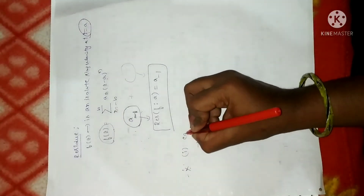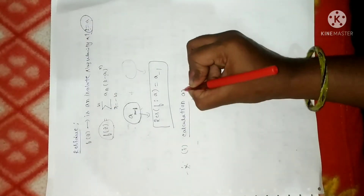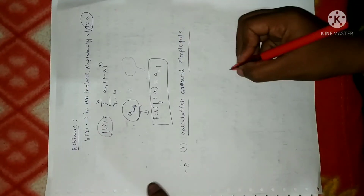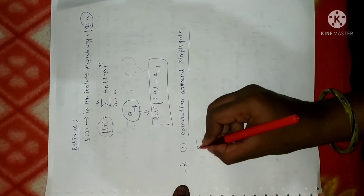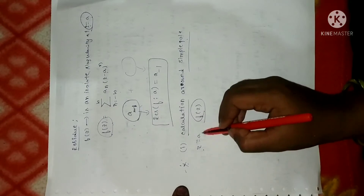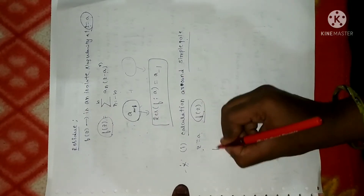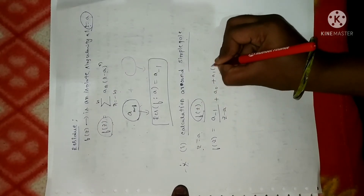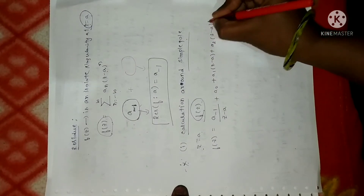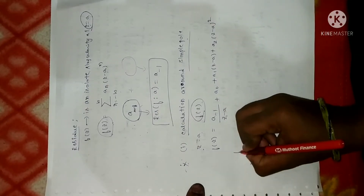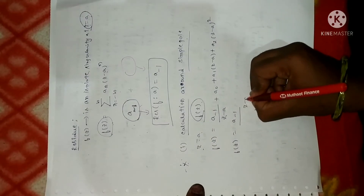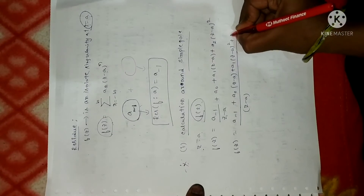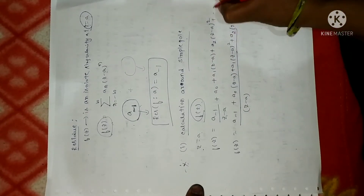We can calculate residues in several cases. Method 1 is the calculation of residue around a simple pole. Suppose z = a is a simple pole of f(z). The Laurent series expansion of f(z) around a simple pole is: f(z) = a₋₁/(z−a) + a₀ + a₁(z−a) + a₂(z−a)² + ···